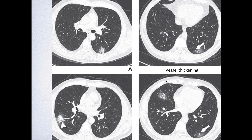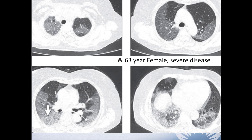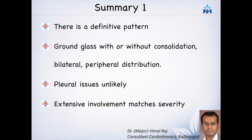Images from this paper highlighted prominent vessels at and adjoining the lesion, described as vascular thickening. Peripheral lower-lobe predominant ground glass changes were most common, and one patient with severe disease showed much greater extent of involvement consistent with clinical severity. In summary: there is a definitive pattern of COVID-19 on chest CT—ground glass with or without consolidation as a mixed pattern, bilateral and peripheral distribution. Pleural involvement is unlikely, and extensive involvement may correlate with disease severity.